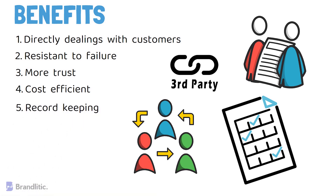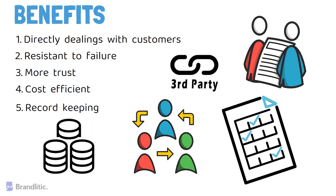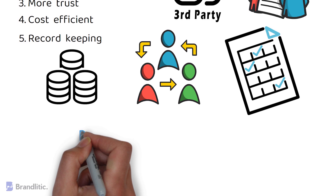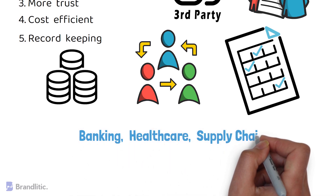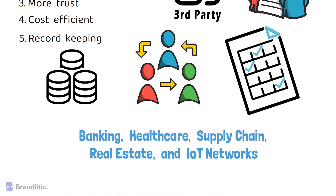Fifth, they offer record-keeping — all contract transactions are stored in chronological order in the blockchain and can be accessed along with a complete audit trail. Smart contracts are quite awesome, and that is one of the reasons for their mass adoption in banking, healthcare, supply chain, real estate, and IoT networks.